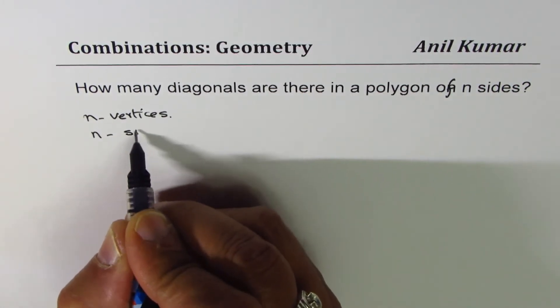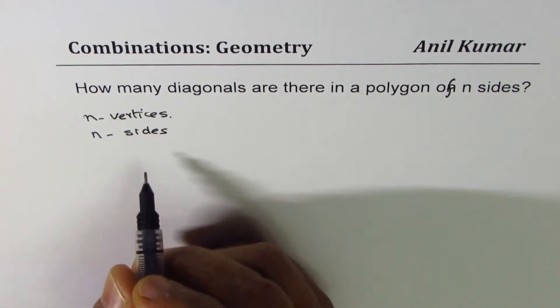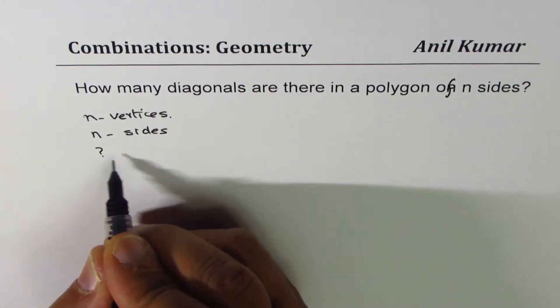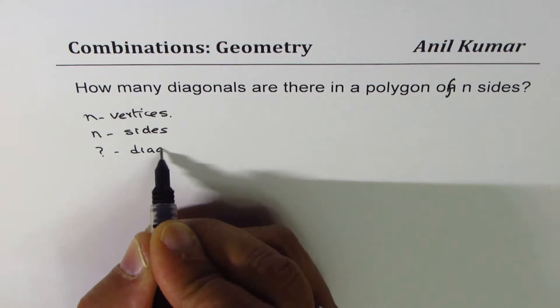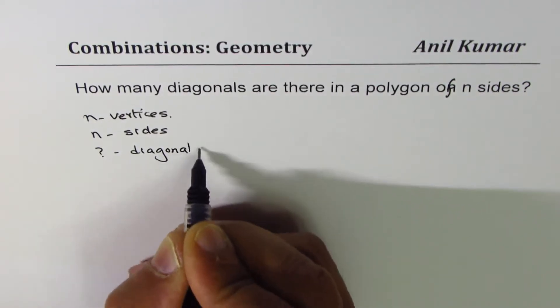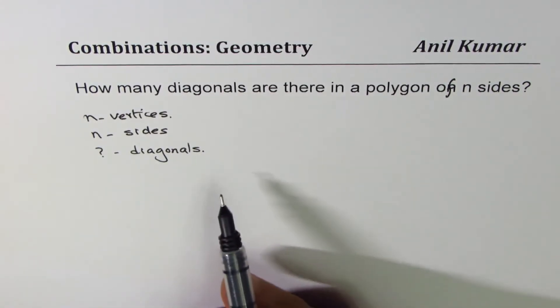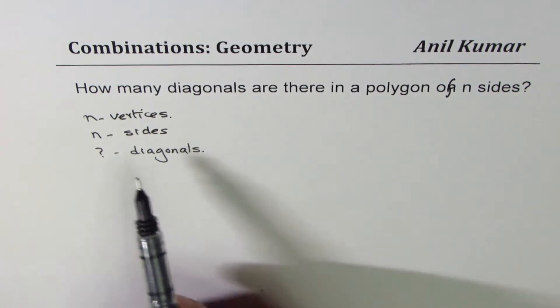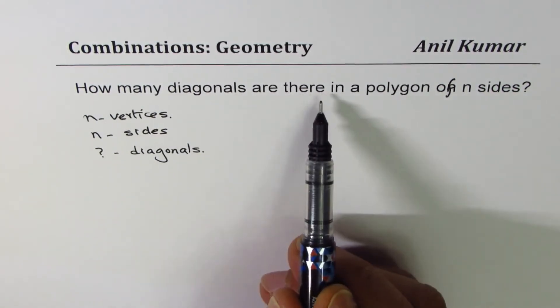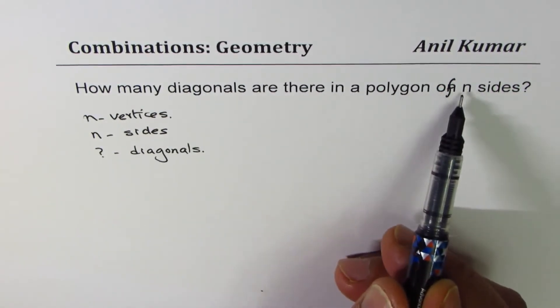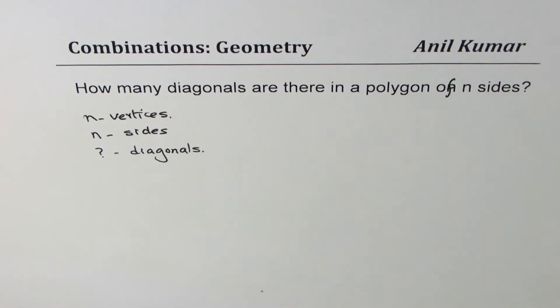There are n vertices and there are n sides. So we want to find the number of diagonals. The question is, how many diagonals are there in a polygon of n sides? Do answer the question and then look into my suggestion.